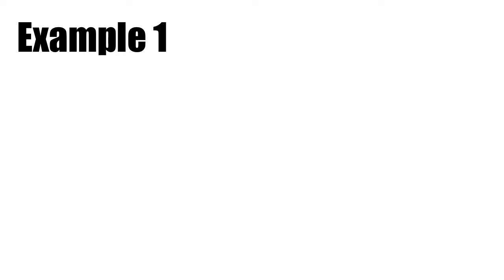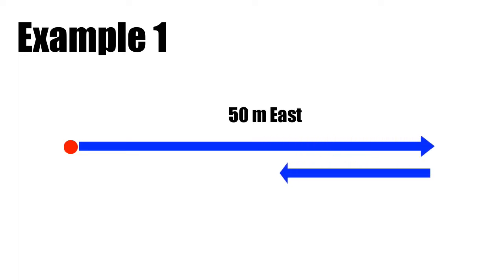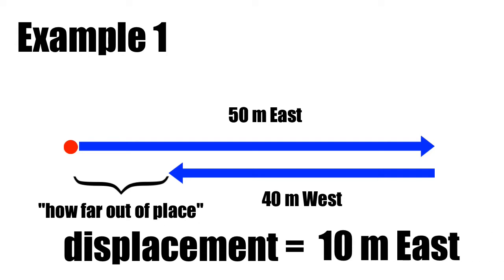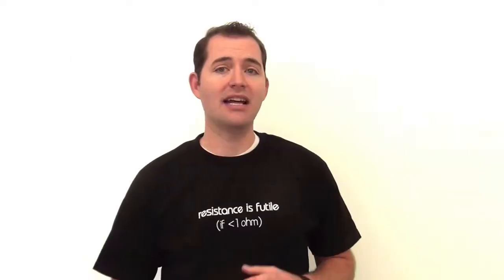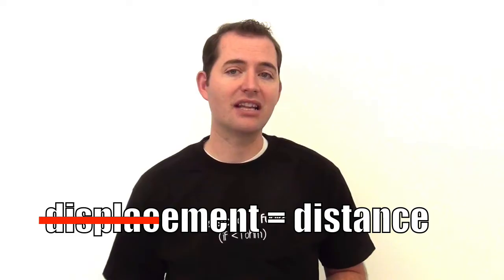Now if we're talking about displacement, it's a little different. The motion of the object is the same, but its displacement is how far out of place it is, or how far away it is from its starting point. The displacement of the object in this case is 10 meters east, meaning it's 10 meters east out of place from where it started. From this example, we can see that displacement and distance are very different things.